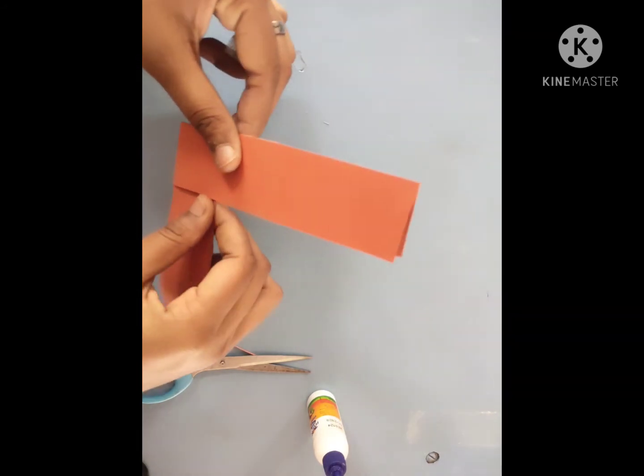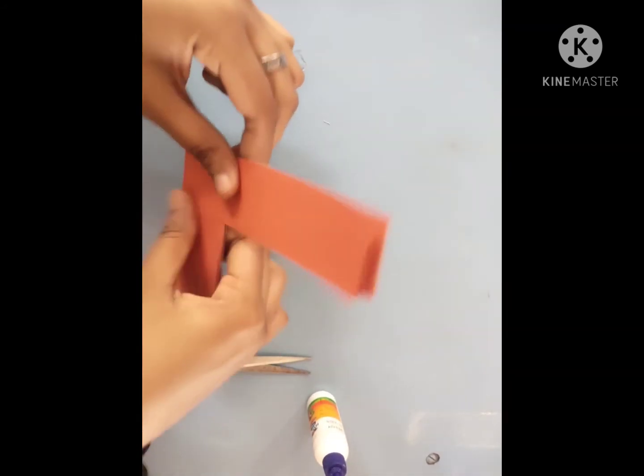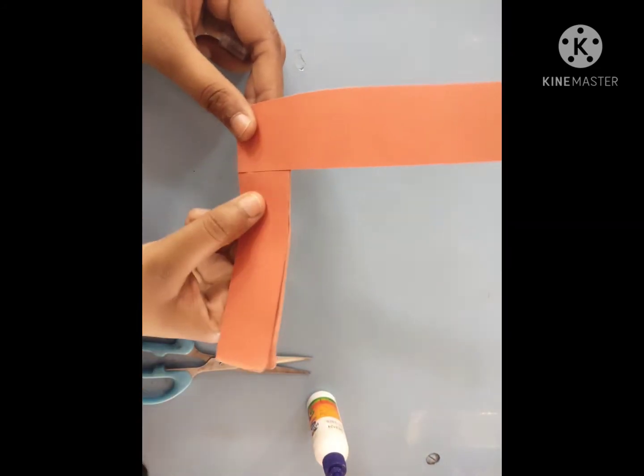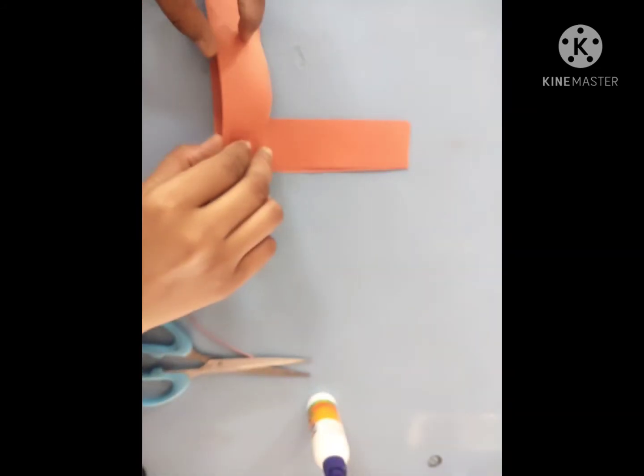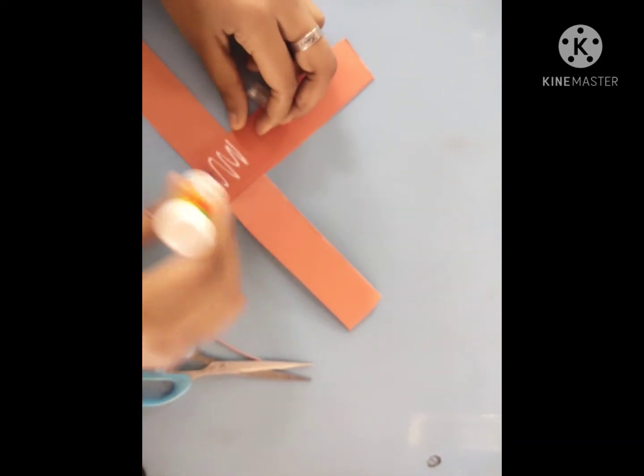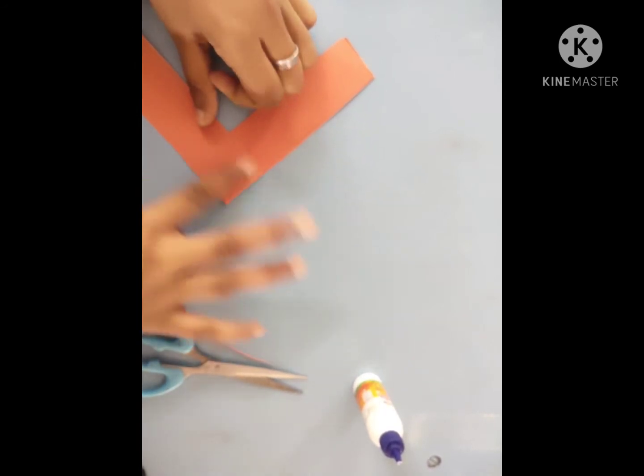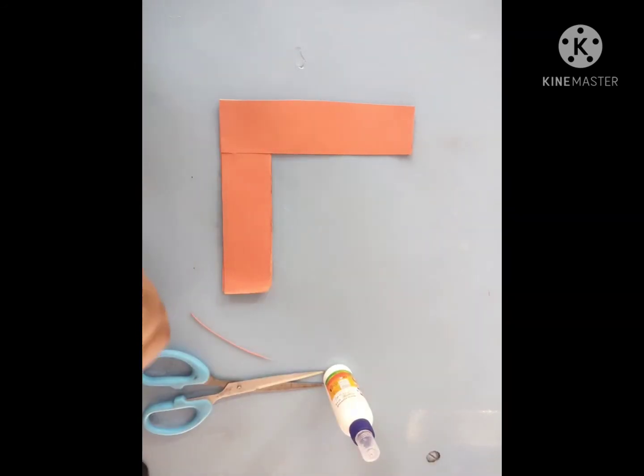Remember to paste it nice and tightly so that it will not move when you use it. So here I have pasted it right here, and I am pasting it from here too. Now we have got a perfectly stable 90 degree angle measure.